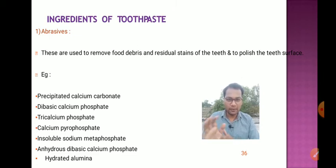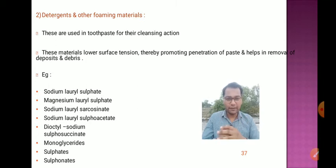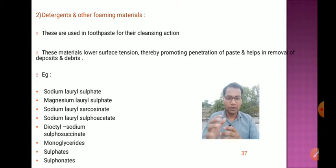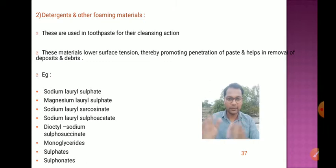Another ingredient is detergents and other foaming materials. These are used in toothpaste for their cleansing action — they lower surface tension, thereby promoting penetration of the paste and helping in removal of deposits and debris. Examples include sodium lauryl sulfate (a surfactant with HLB value approximately 40), magnesium lauryl sulfate, sodium lauryl sarcosinate, sodium lauryl sulfoacetate, di-octyl sodium sulfosuccinate, and monoglyceride sulfates and sulfonates.